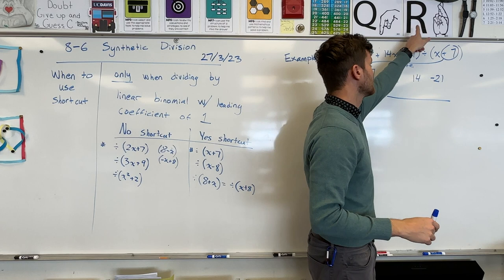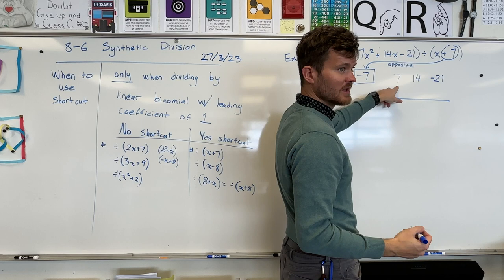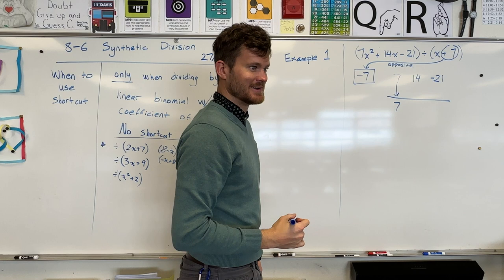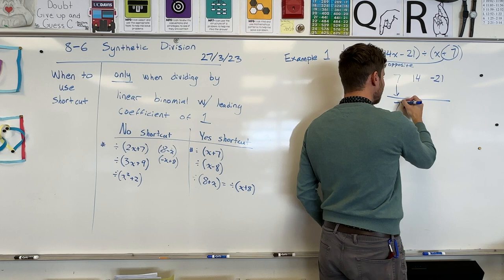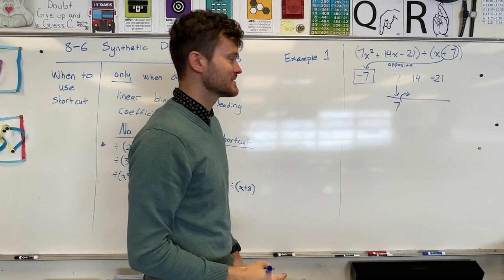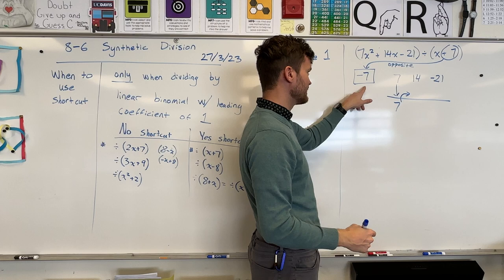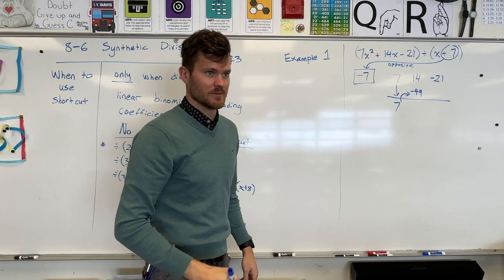Why is that negative? Every time you go past the diagonal line upward, you pay the toll collector and multiply. The first number, 7, you always drop it straight below the line. Then every time you come up past the diagonal, you multiply that number by the toll collector number, and then add them together. So 7 times negative 7 gives negative 49, and then add 14 plus negative 49.